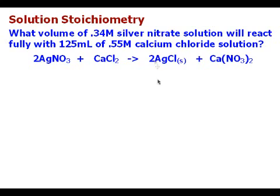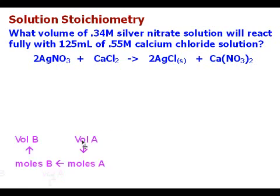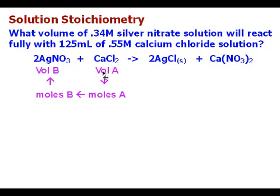In this problem we have to identify what we start with and what we're going to. We start out with a volume and a molarity of calcium chloride, and the unknown is what volume of 0.34 molar silver nitrate. So in this stoichiometry problem we're going to go from volume to moles, use our mole ratio from the balanced equation, and then convert back to volume from moles. We're going to use the molarity to do that.